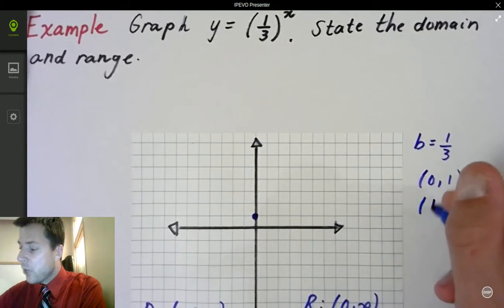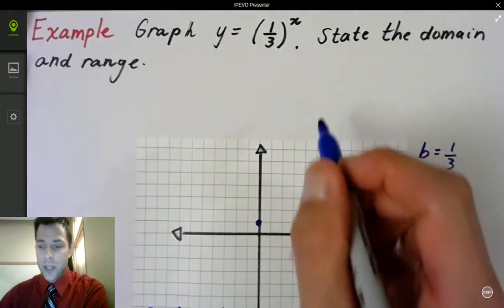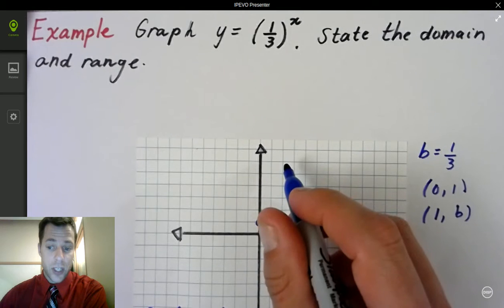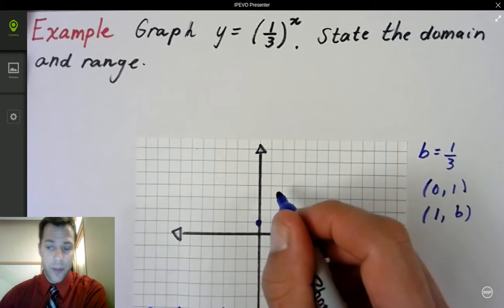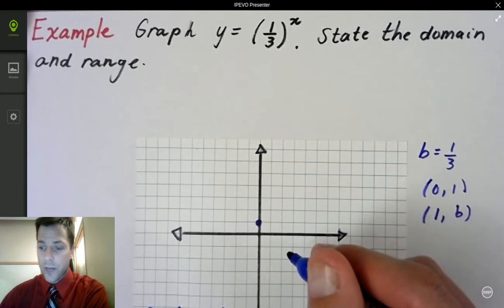And then you had 1, b. Now, this is what I mean it switches. 1, b, when b is greater than 1, it was that nice big number, 1 to the third, 1 to the fourth. Or 1 comma 4, 1 comma 3, if you did the last video when b was 3 and b was 4.